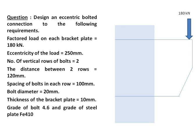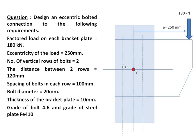The eccentricity of the load is 250 mm — that is the distance from the line of action of the load to the CG, which is e = 250 mm. The number of vertical rows of bolts is 2, meaning we bolt the two plates using two vertical rows. The distance between the two rows is 120 mm, so each row is 60 mm from the CG.